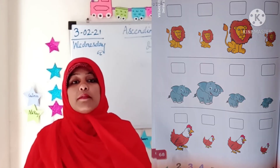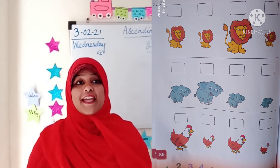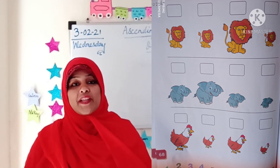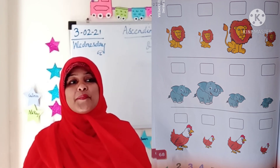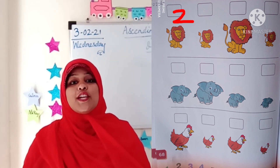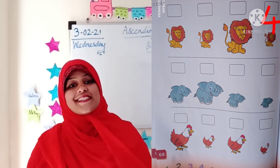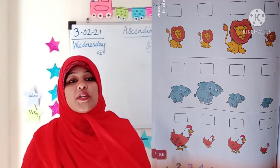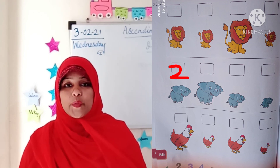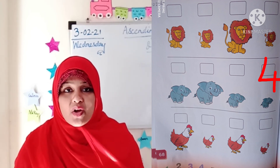And now please turn your page — come on, page number 68. Here we need to number the objects from 1 to 4, from biggest to smallest. Which is the biggest lion over here? Yes, please write number 1 over there. A little smaller — yes, the first one — write number 2. A little more smaller — number 3. And the smallest lion — write number 4. Let's move to the elephant. Which is the biggest elephant? Yes, please write number 1. A little smaller — number 2. A little more smaller — number 3. And the smallest — write number 4.